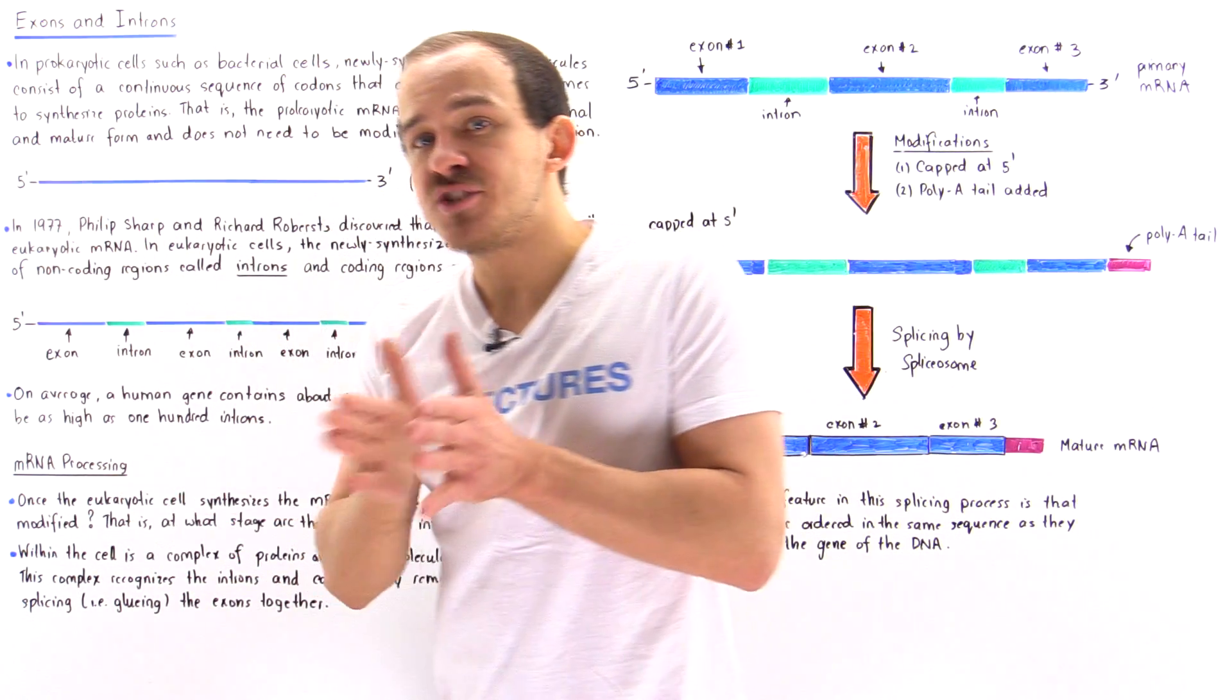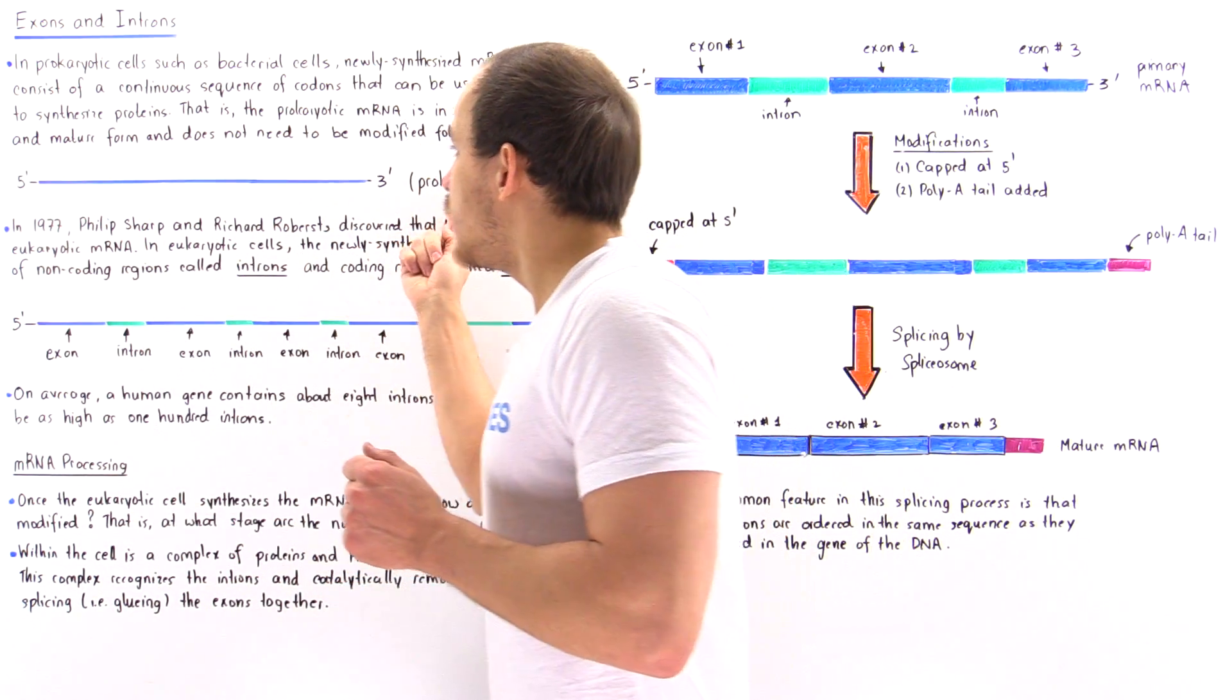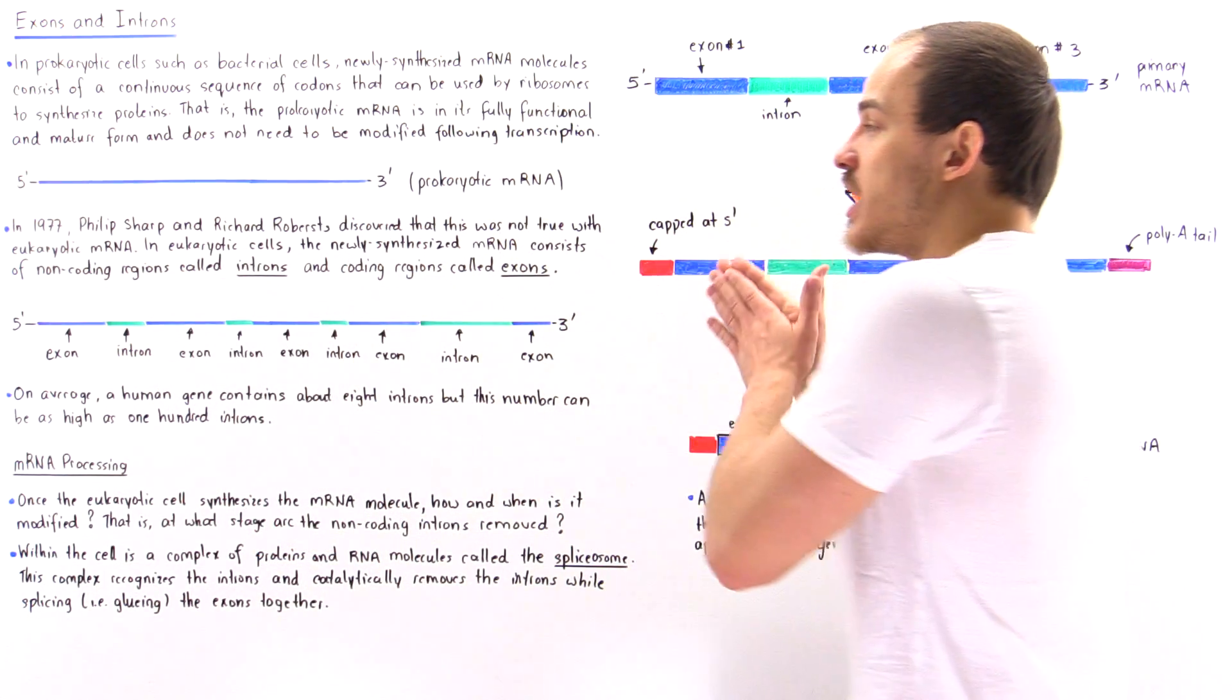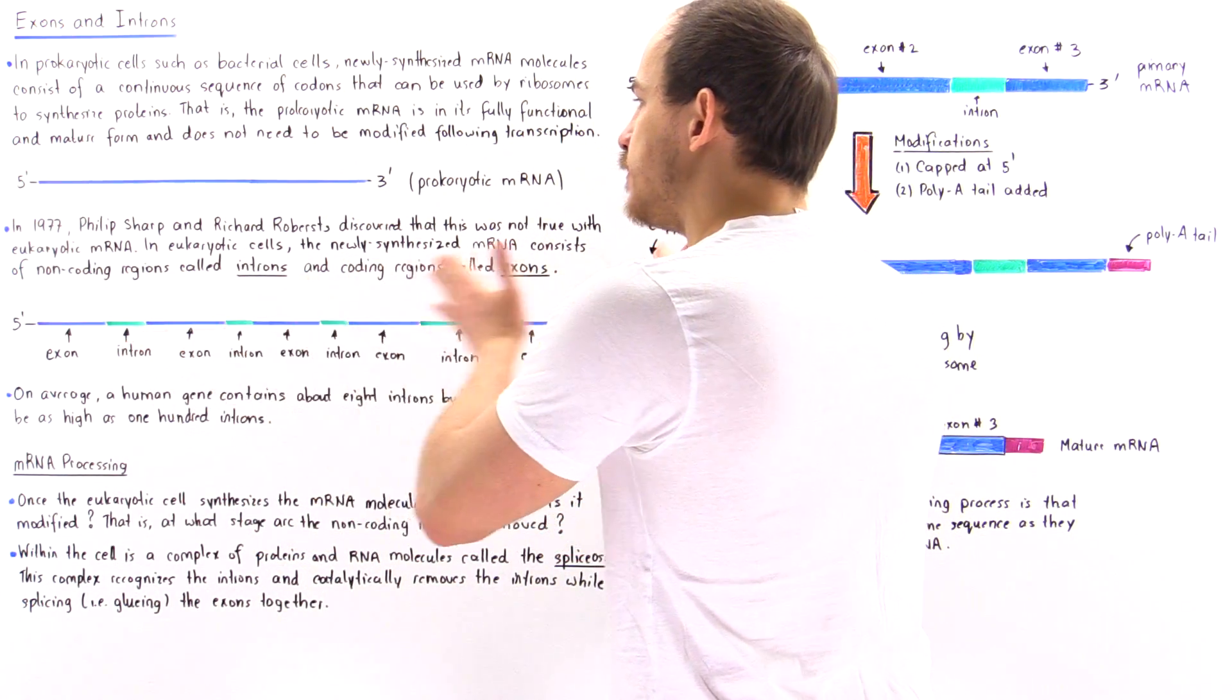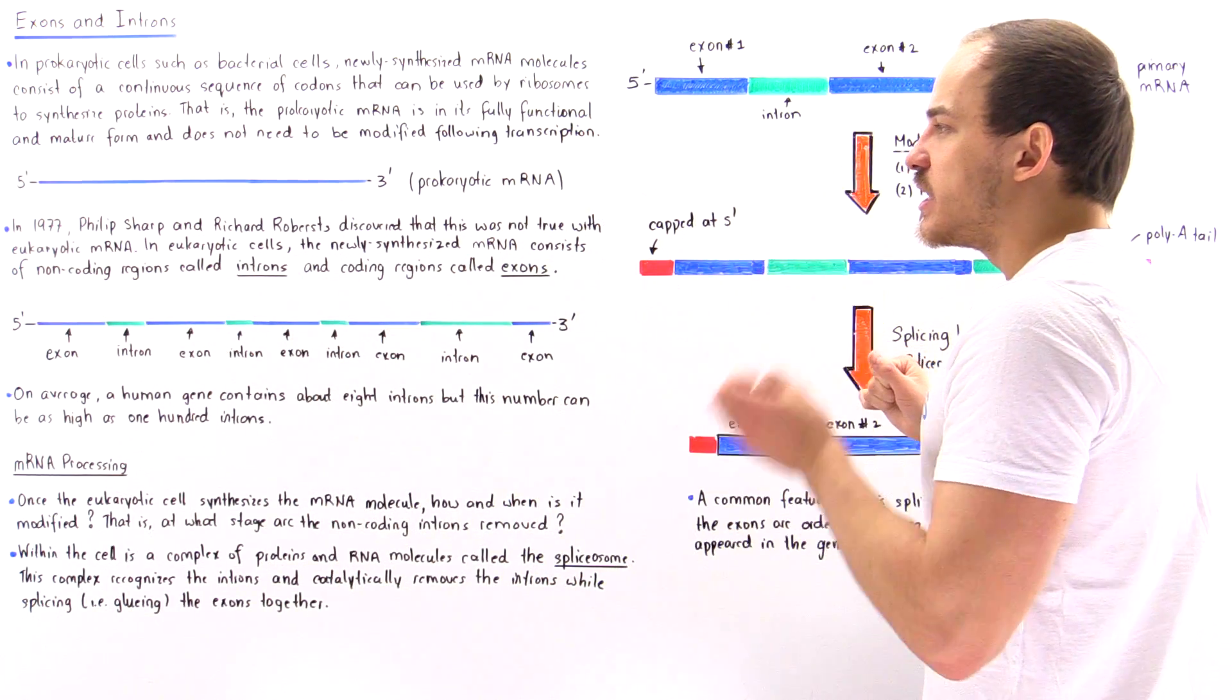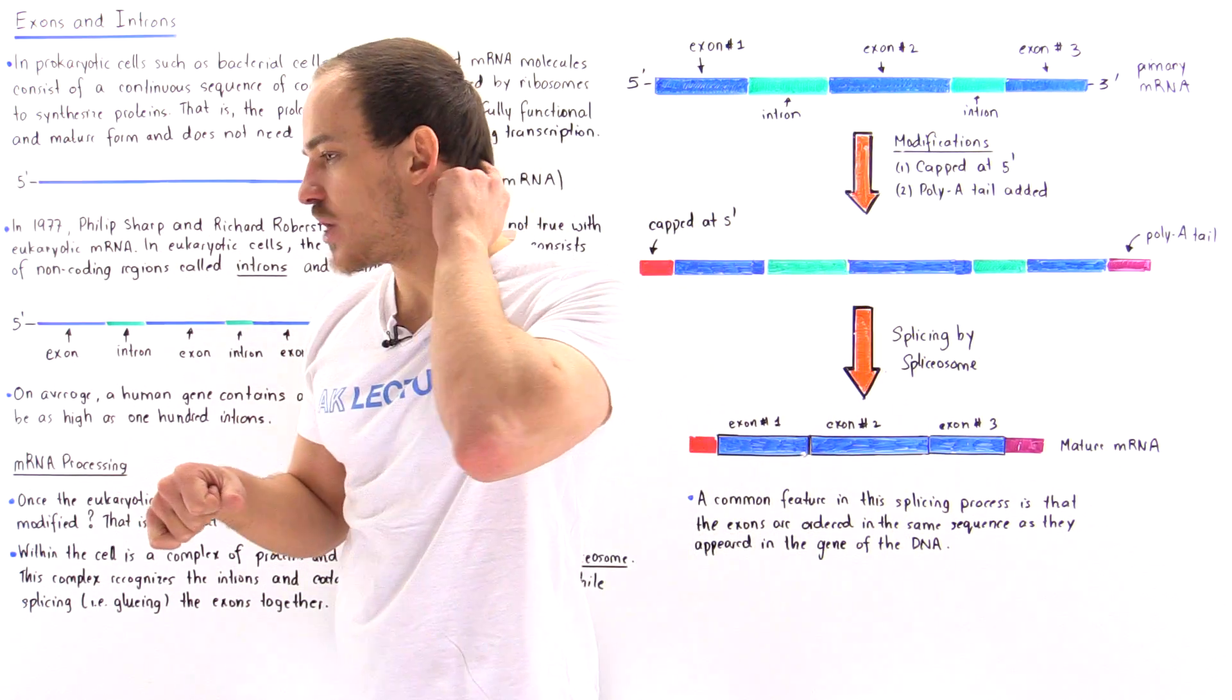So if blue means we have these codons, then the entire mRNA molecule in prokaryotic cells consists of this blue region because these blue regions are the codons that express that particular sequence on the polypeptide chain.